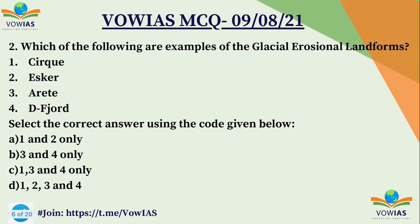The second question: which of the following are examples of glacial erosional landforms? A. Cirque. B. Esker. C. Arête. D. Fjord. You have to choose the correct answer.